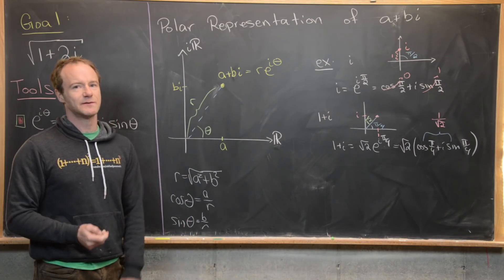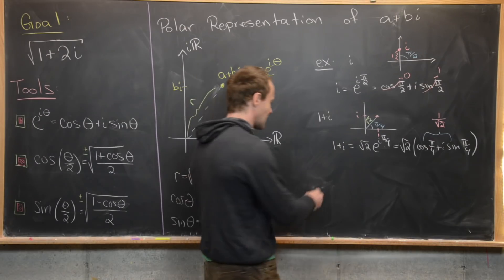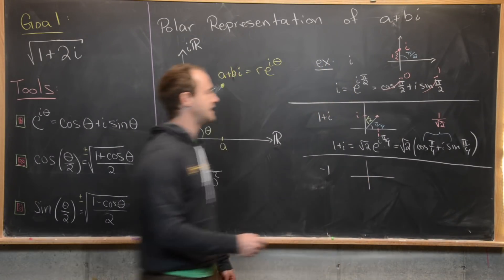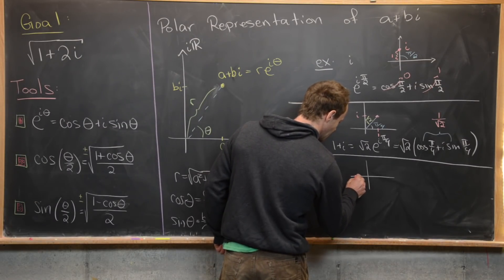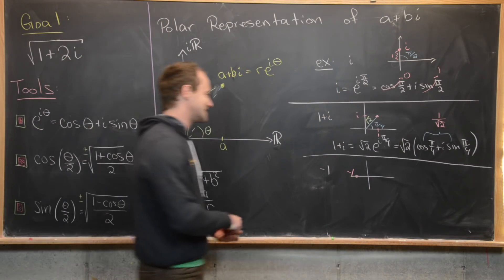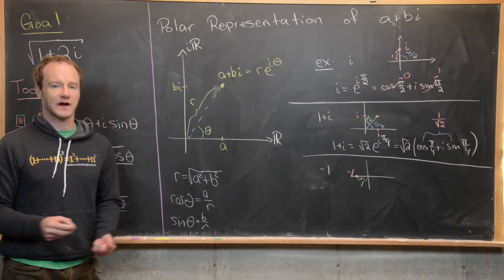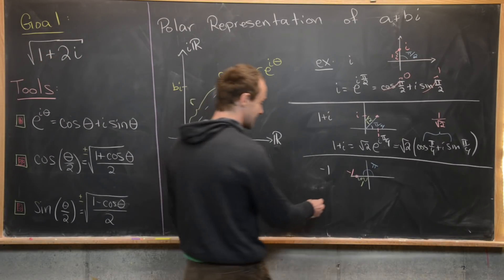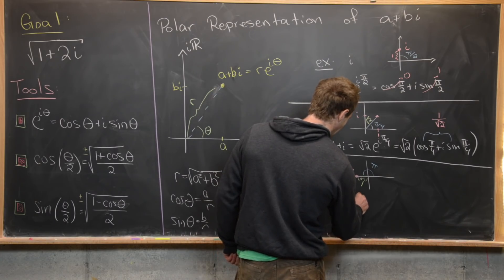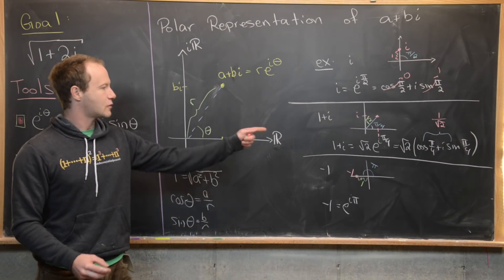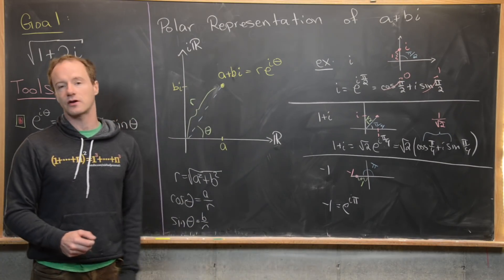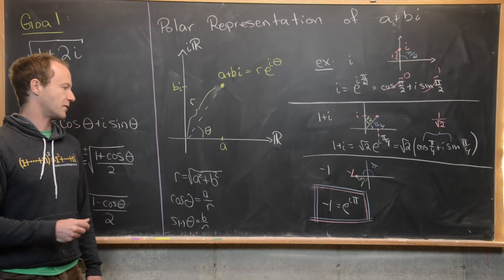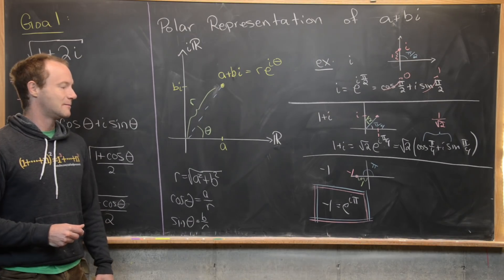Let's do one more example — this is sometimes many people's favorite equation in math. Consider the number minus one in the complex plane. It sits along the negative real axis, its distance from the origin is one, and the angle it defines is 180 degrees or pi radians. So we can write minus one as e to the i pi using Euler's formula. This is the formula many people think is one of the most beautiful in math, sometimes presented as e to the i pi plus one equals zero.